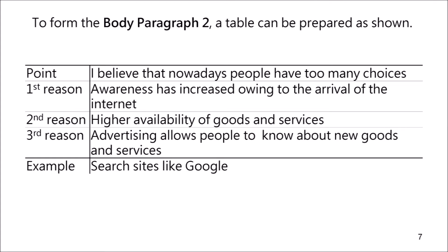To form body paragraph 2, a table can be prepared as shown. My point here is that nowadays people have too many choices. The first reason is that awareness has increased owing to the arrival of the internet. My second reasoning is that there is a higher availability of goods and services. My third reasoning is that advertising allows people to know more about new goods and services. As an example, I have cited sites like Google.